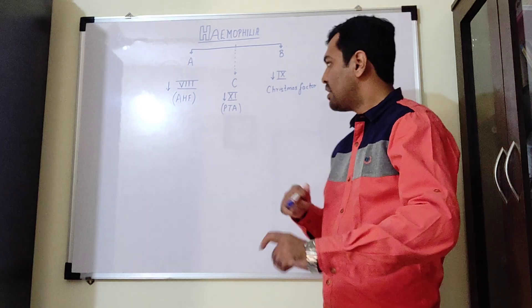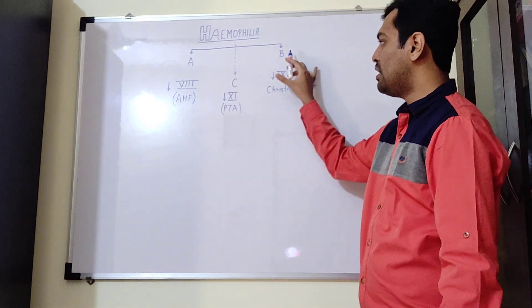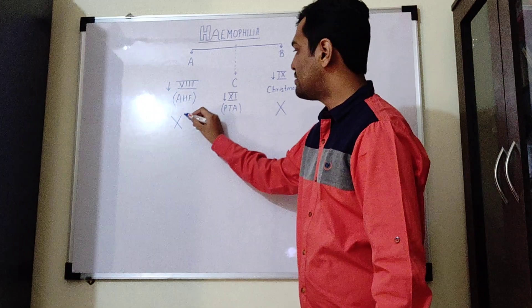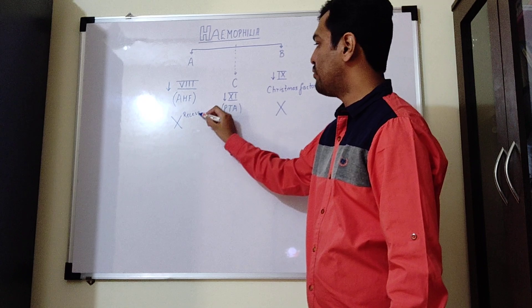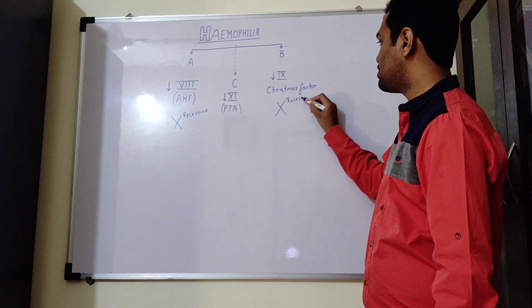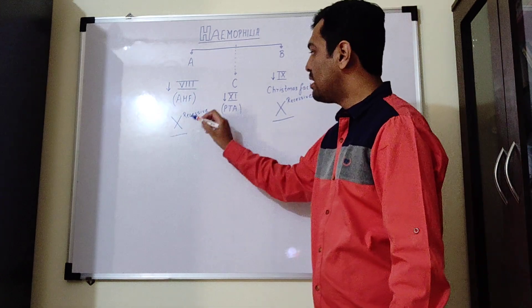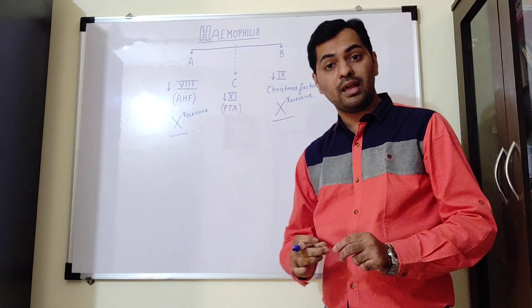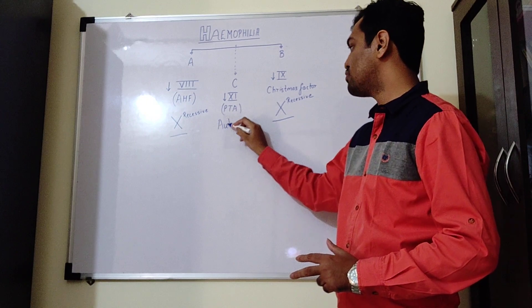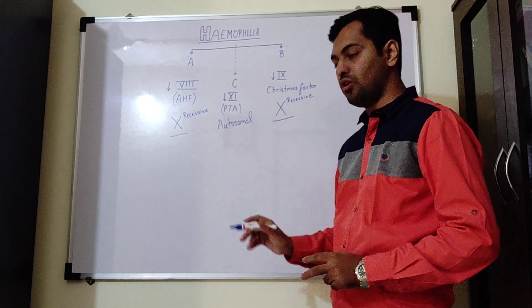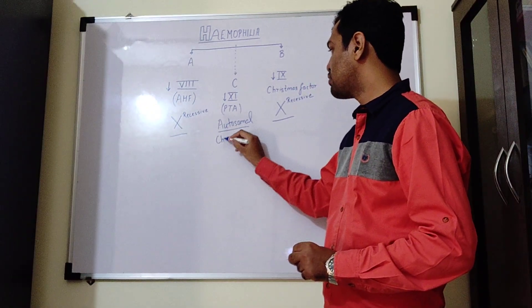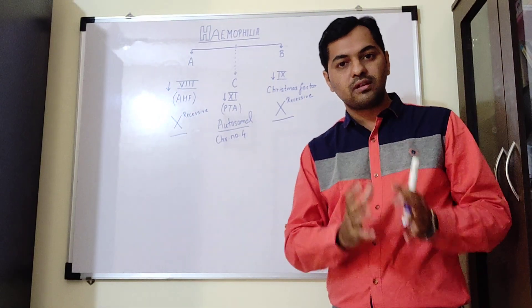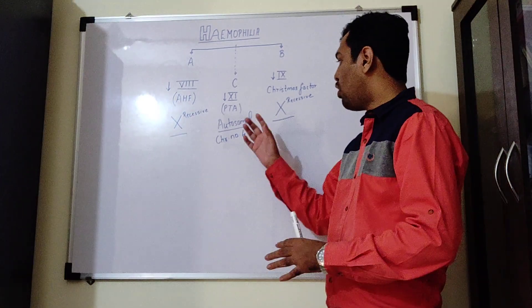The point to be understood is that hemophilia A and hemophilia B both are X-linked disorders. In this X-linked, there is presence of a recessive gene which causes the condition. Whenever the recessive condition is present on this X chromosome, it leads to hemophilia A or hemophilia B depending on the type of gene which is affected. Whereas hemophilia C is an autosomal disorder, and in this autosomal disorder, the gene is present on an autosome, that is chromosome number 4. Remember that hemophilia A and B are X-linked conditions, whereas hemophilia C is an autosomal condition.